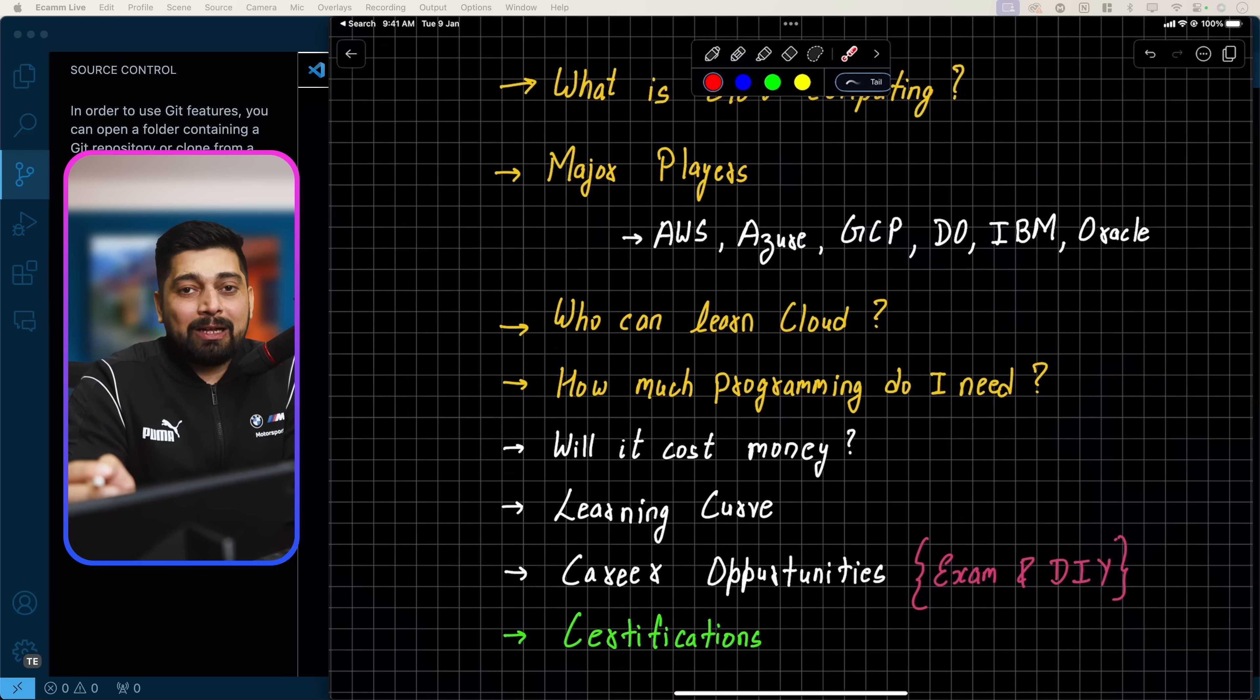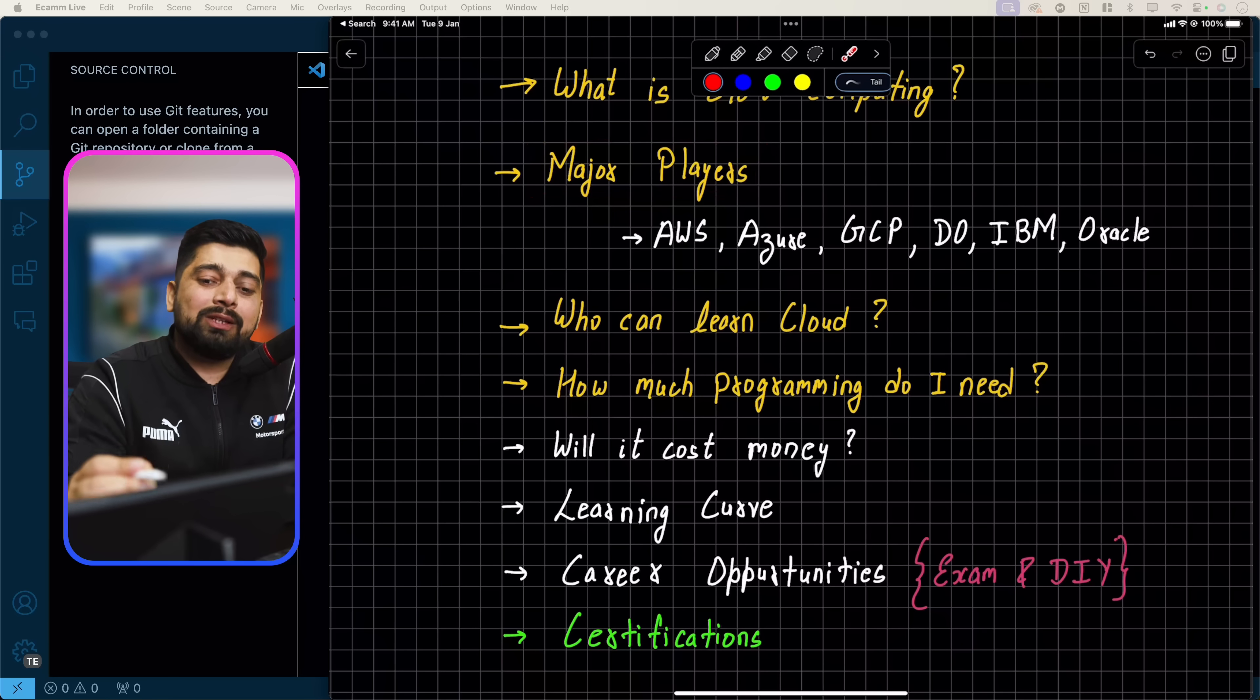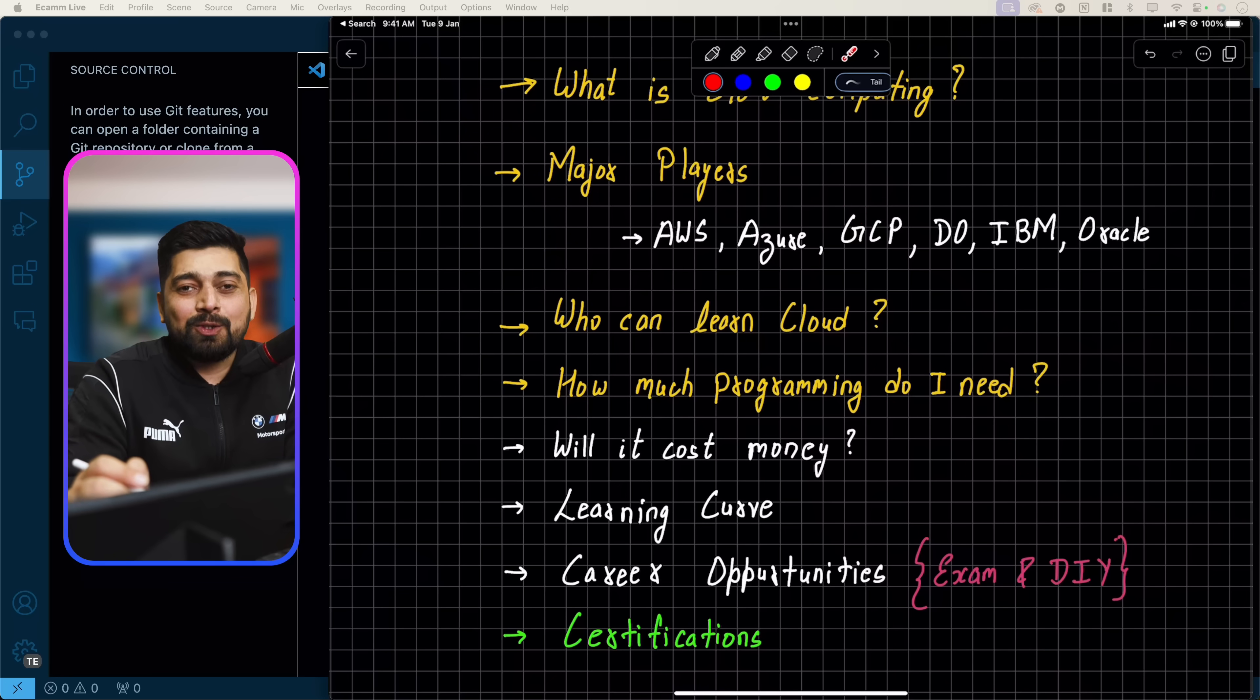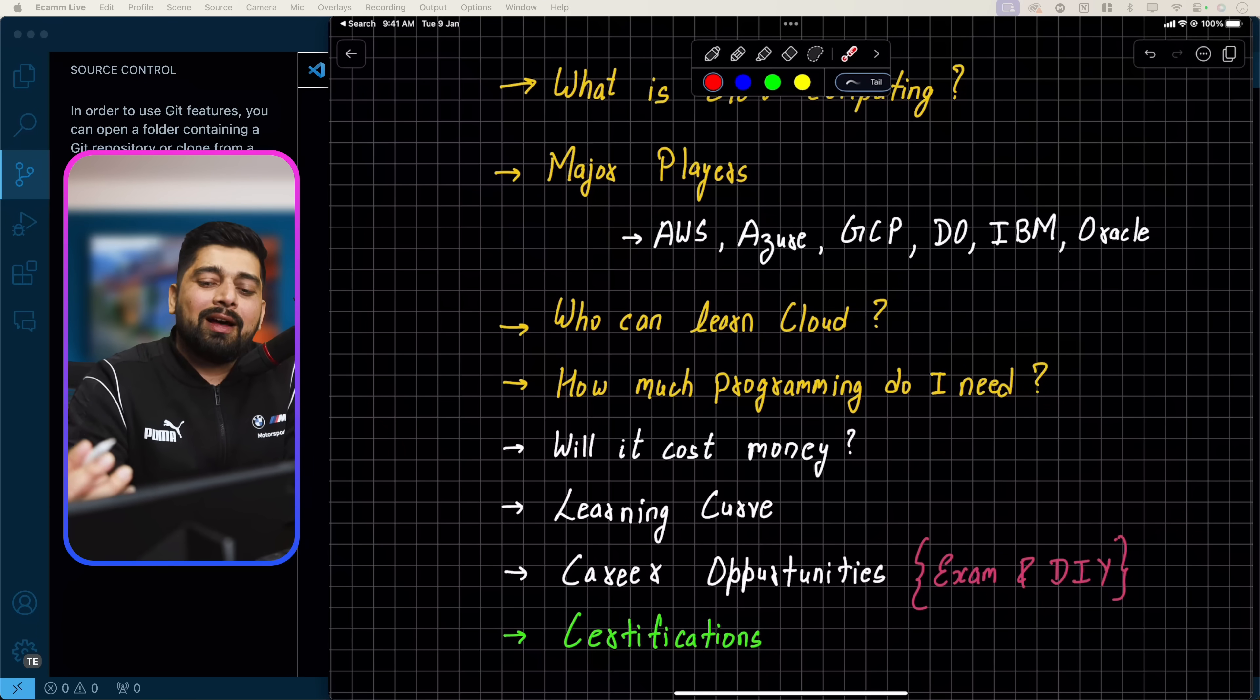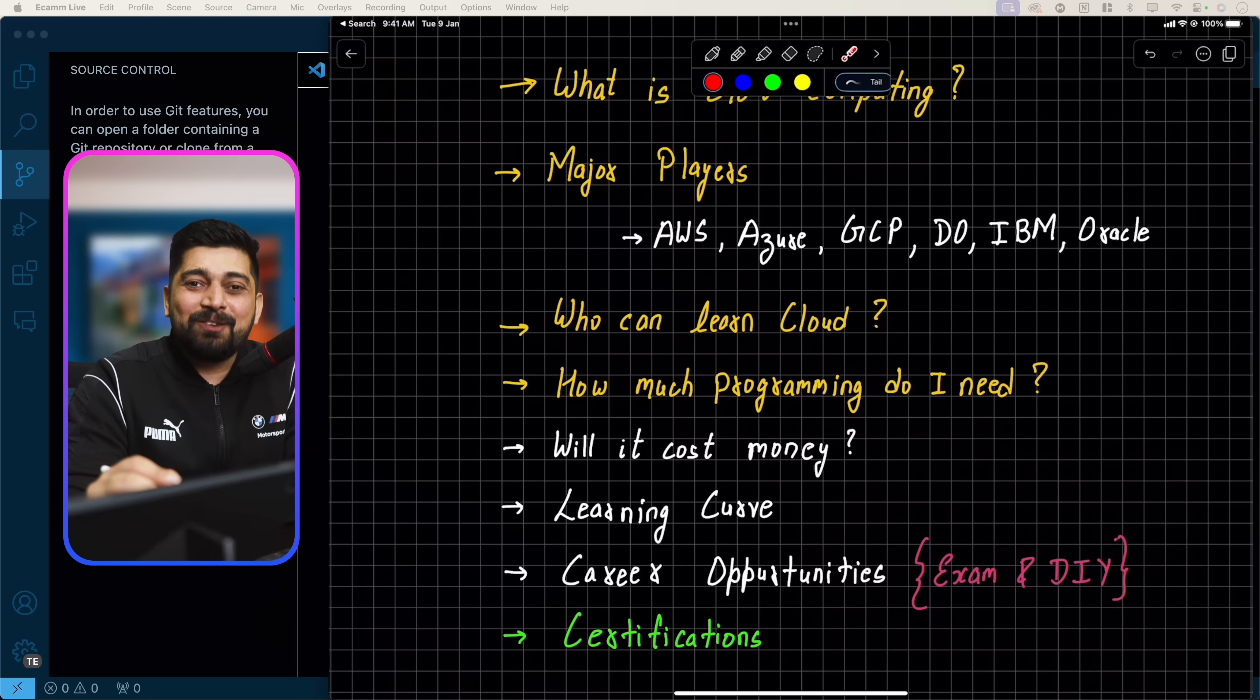They give you the servers, the ability to have computation, storage, and networking, and we just master how we can do that while sitting at our home with just a browser. So that's basically your cloud computing. The next question is: who are the major players in the world of cloud computing? There are plenty of them. Usually when it comes to the major players, you will see there are only three contenders: AWS, Azure, and GCP.